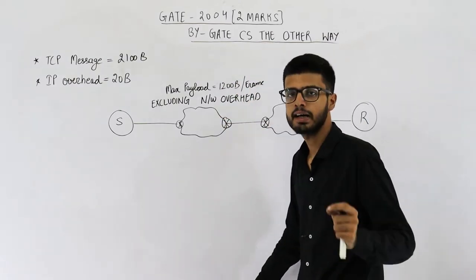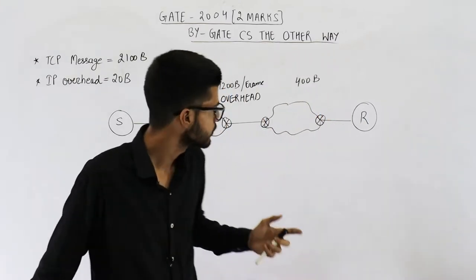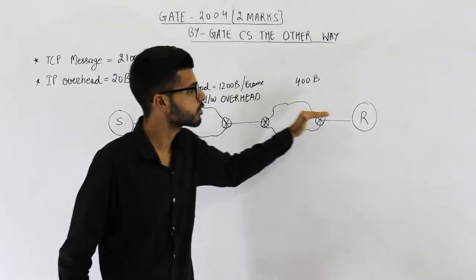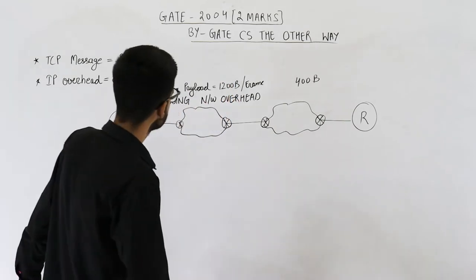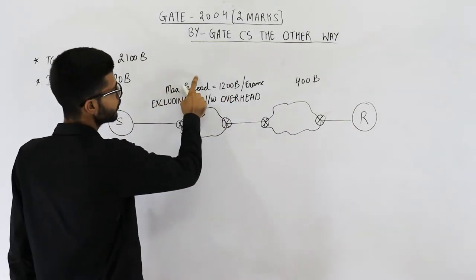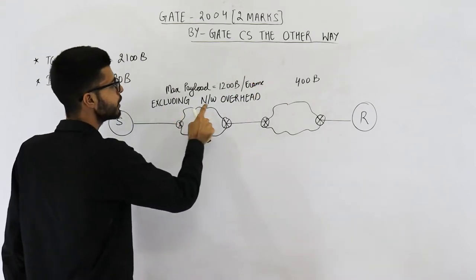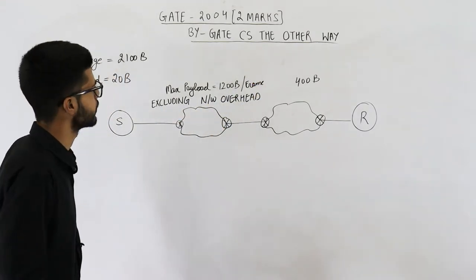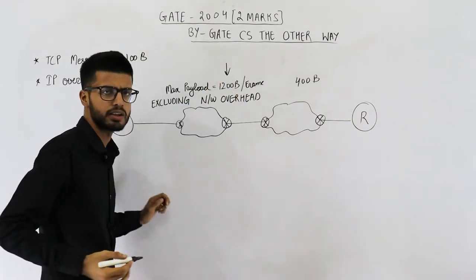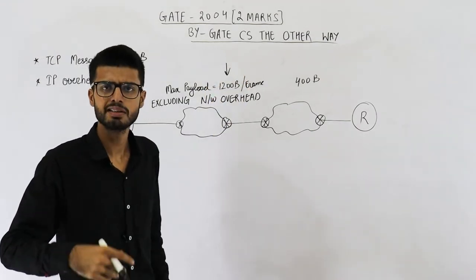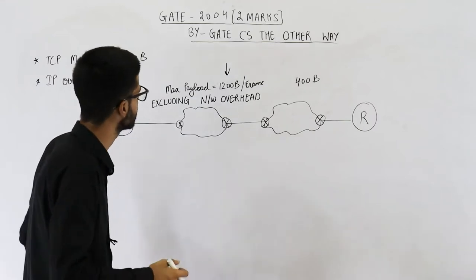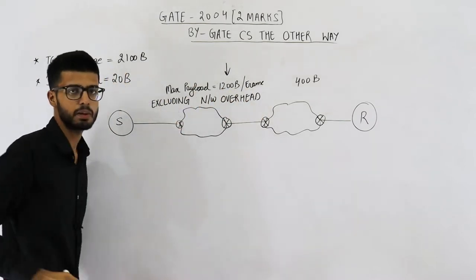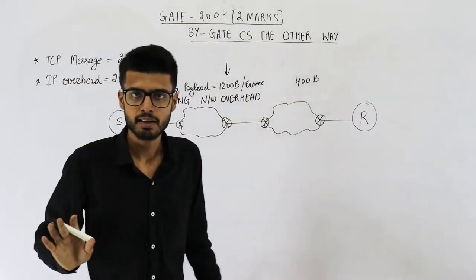So we want to send data across two networks — the first network and the second network. Now there is a line which reads: maximum payload is equal to 1200 bytes per frame, excluding network overhead, for the first network. What is the meaning of this line? What is this 1200 bytes actually? Is it MTU? Is it the MSS or what? Let us analyze this. They are saying maximum payload per frame is 1200 bytes. Frame is used at the data link layer.